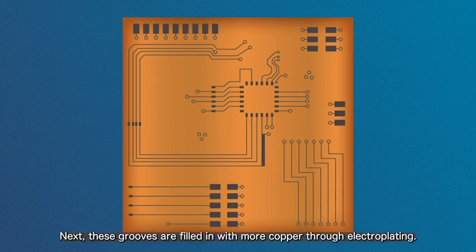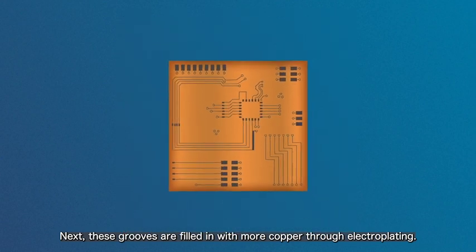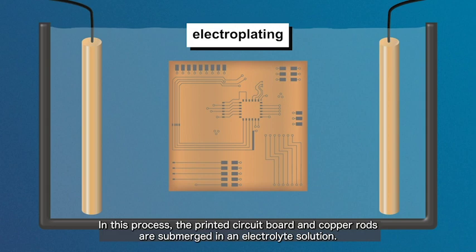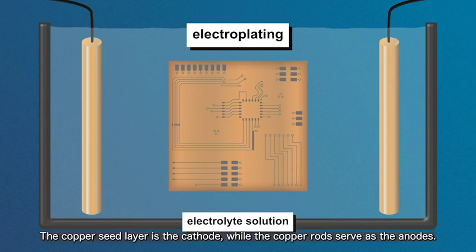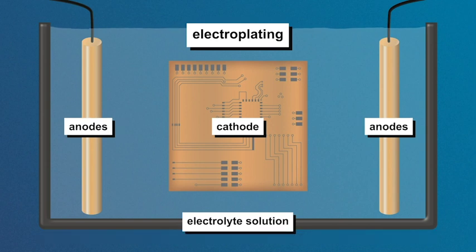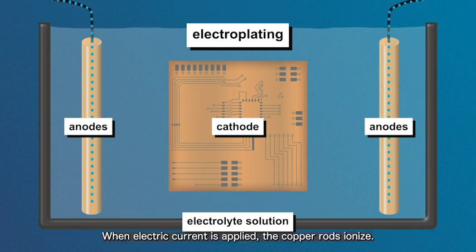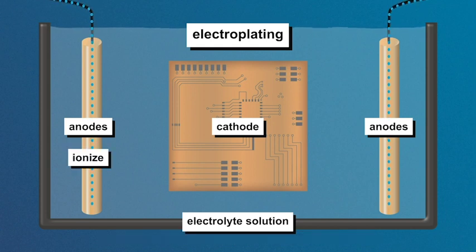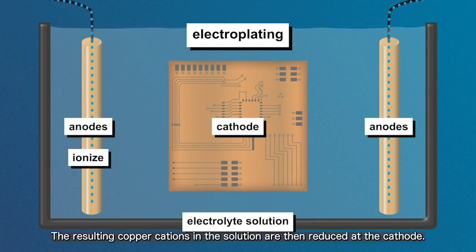Next, these grooves are filled in with more copper through electroplating. In this process, the printed circuit board and copper rods are submerged in an electrolyte solution. The copper seed layer is the cathode, while the copper rods serve as the anodes. When electric current is applied, the copper rods ionize. The resulting copper cations in the solution are then reduced at the cathode.